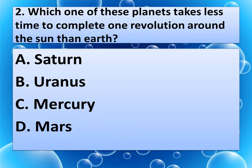Which one of these planets takes less time to complete one revolution around the sun than Earth? Options are A. Saturn, B. Uranus, C. Mercury, D. Mars. Think about the correct answer. And the correct answer is C. Mercury.